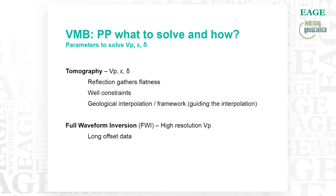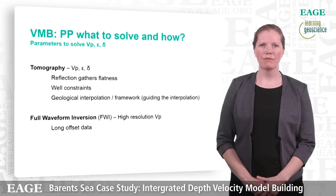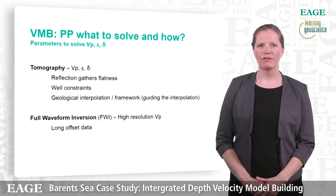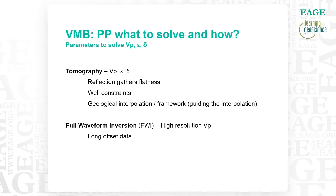For the PP, what do we need to solve and how? First of all we need to solve the vertical P velocity and the horizontal velocity components Epsilon and Delta. The main tool is tomography, where we use reflection gather flatness and well constraints. We also use full waveform inversion that can provide a high resolution VP using long offset data.